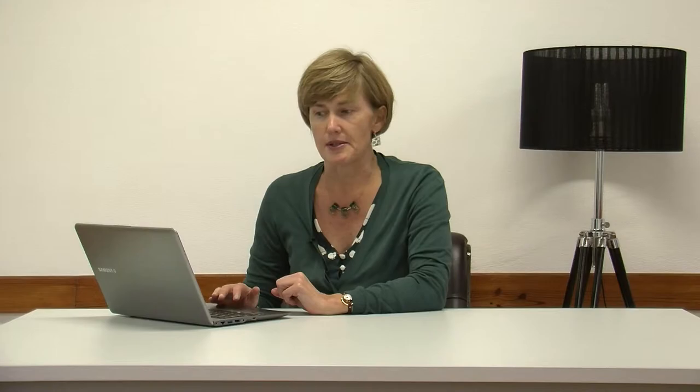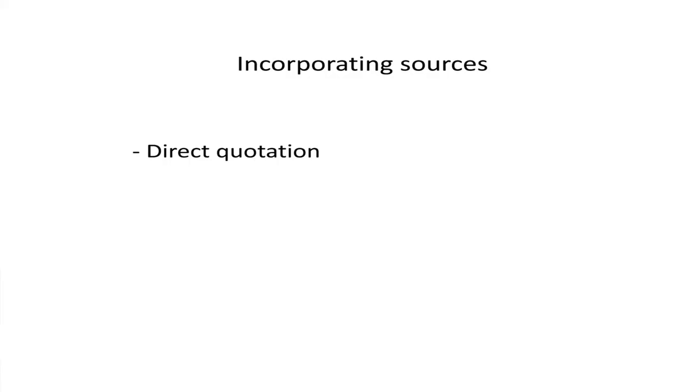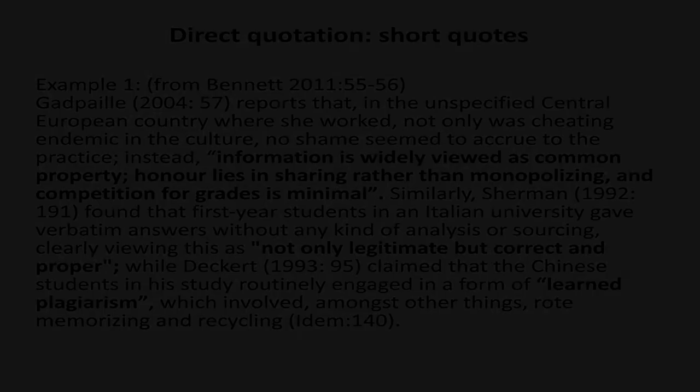There are basically three ways of doing this: direct quotation, paraphrase, and summarising. The first involves giving the exact words that the author wrote, presented in inverted commas if it is a short quote of three lines or fewer, or indented in relation to the body of the text if it is longer than three lines.